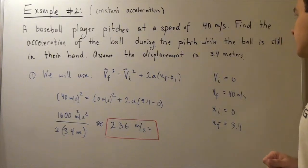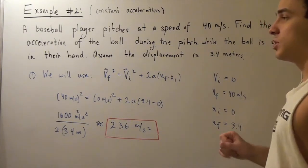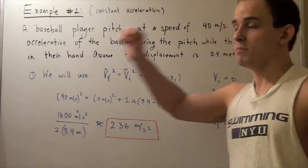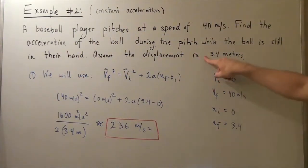is 40 meters per second. Our initial position of the ball at this point is 0. Our final position of the ball at this point, before the person releases the ball, is 3.4 meters, as assumed here.